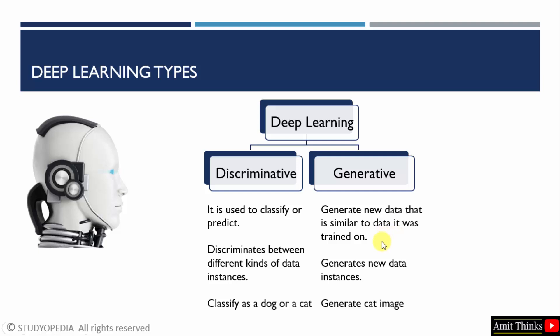But generative AI is a completely different concept. It will generate new data that is similar to data it was trained on — it generates new data instances. In this case, it will generate a new cat image. For example, you can upload your picture and it will generate your AI avatar. Or you can add a text prompt, like asking about anything related to cricket, and it will generate new data or content that resembles the original data it was trained on.